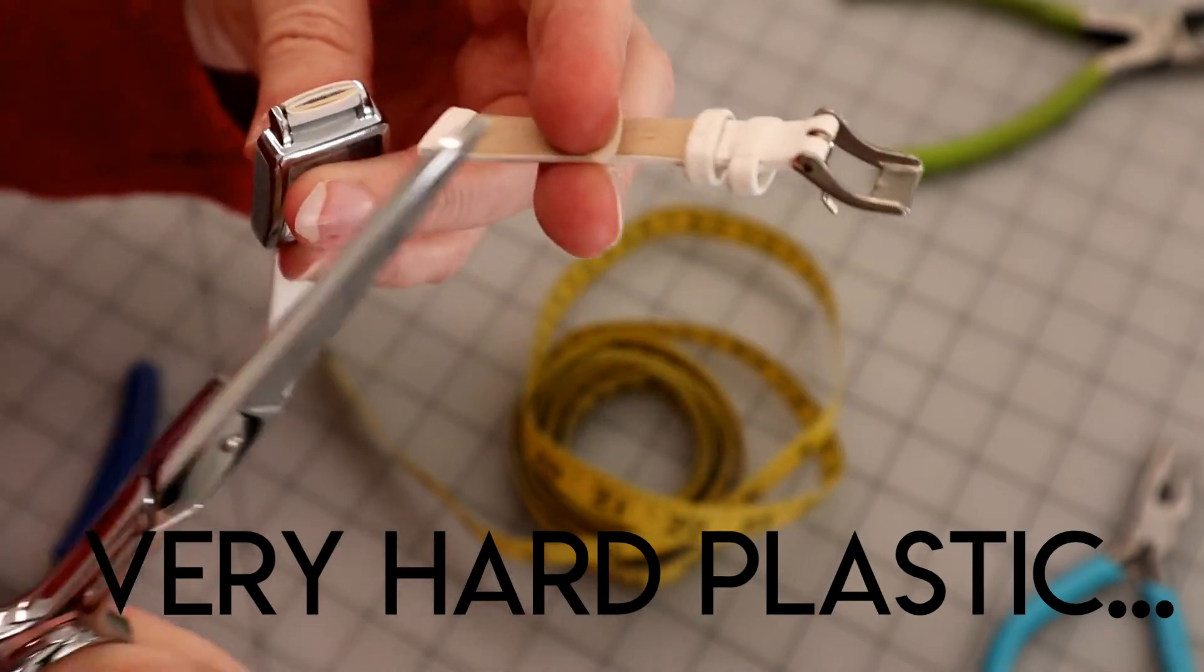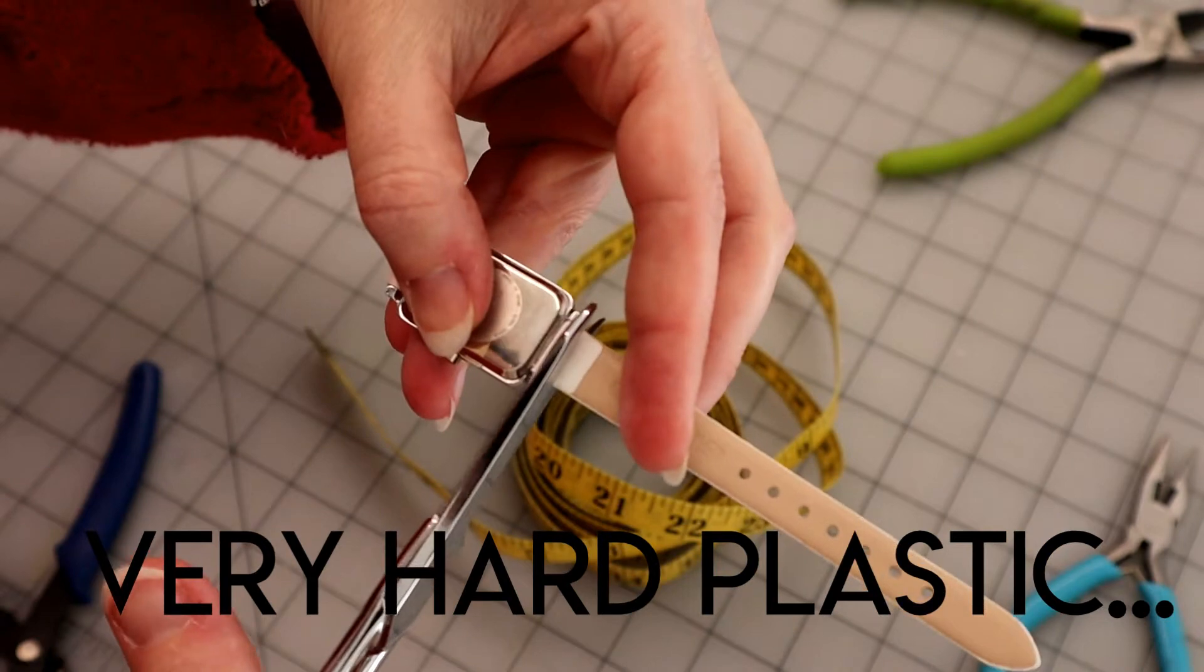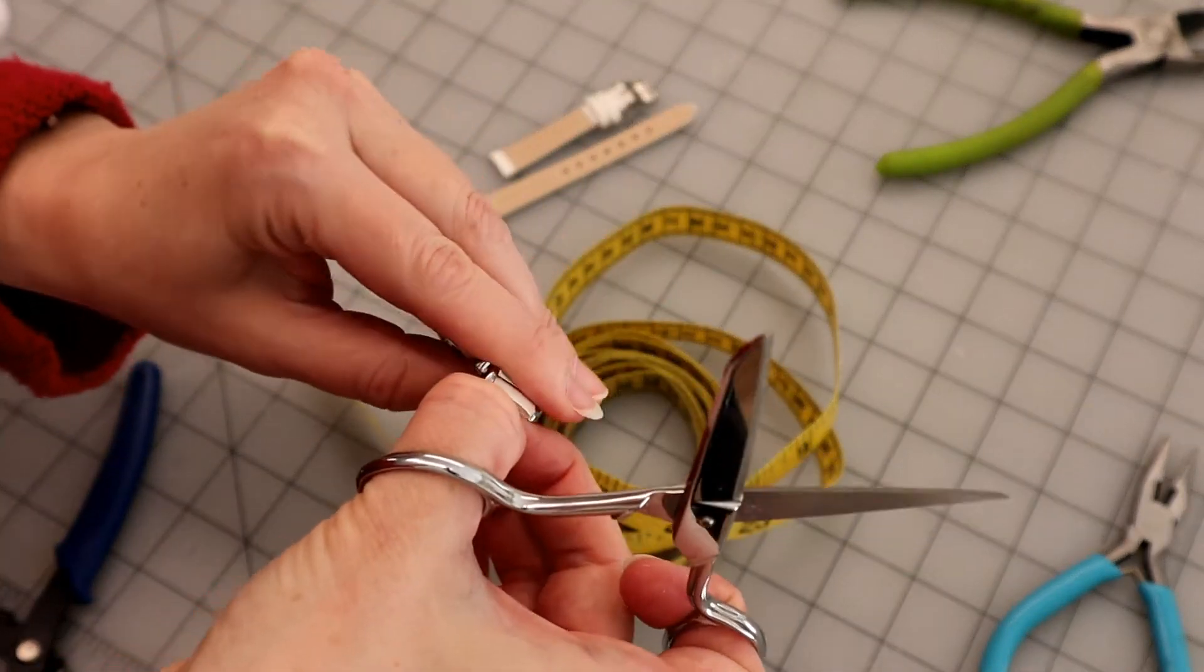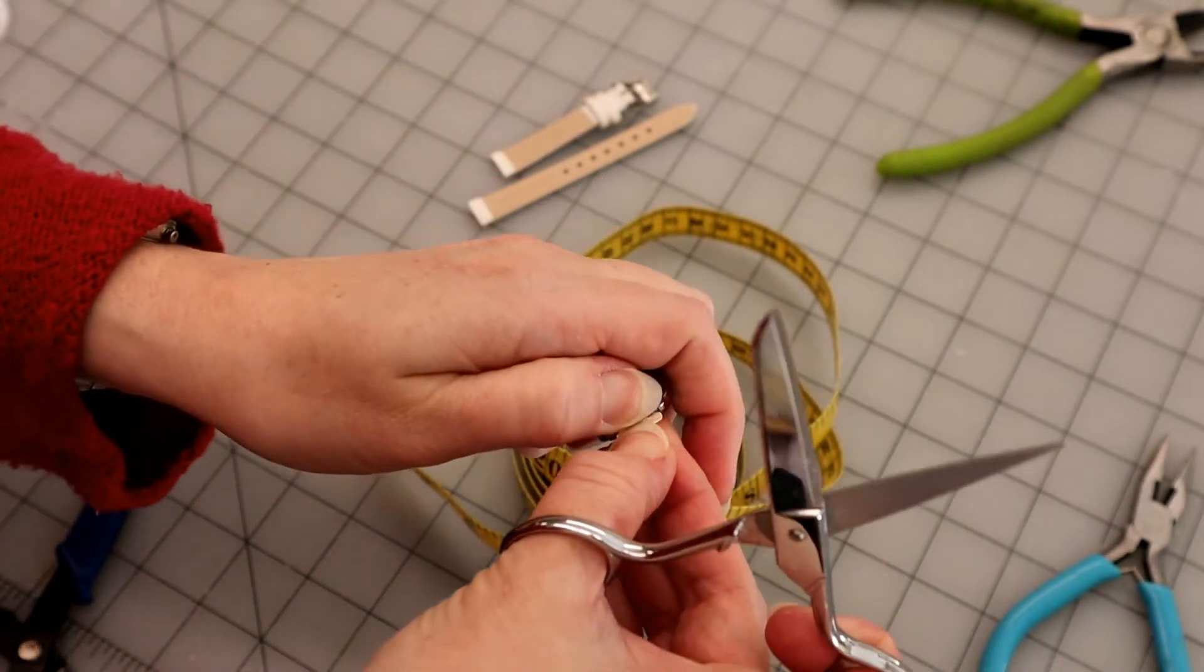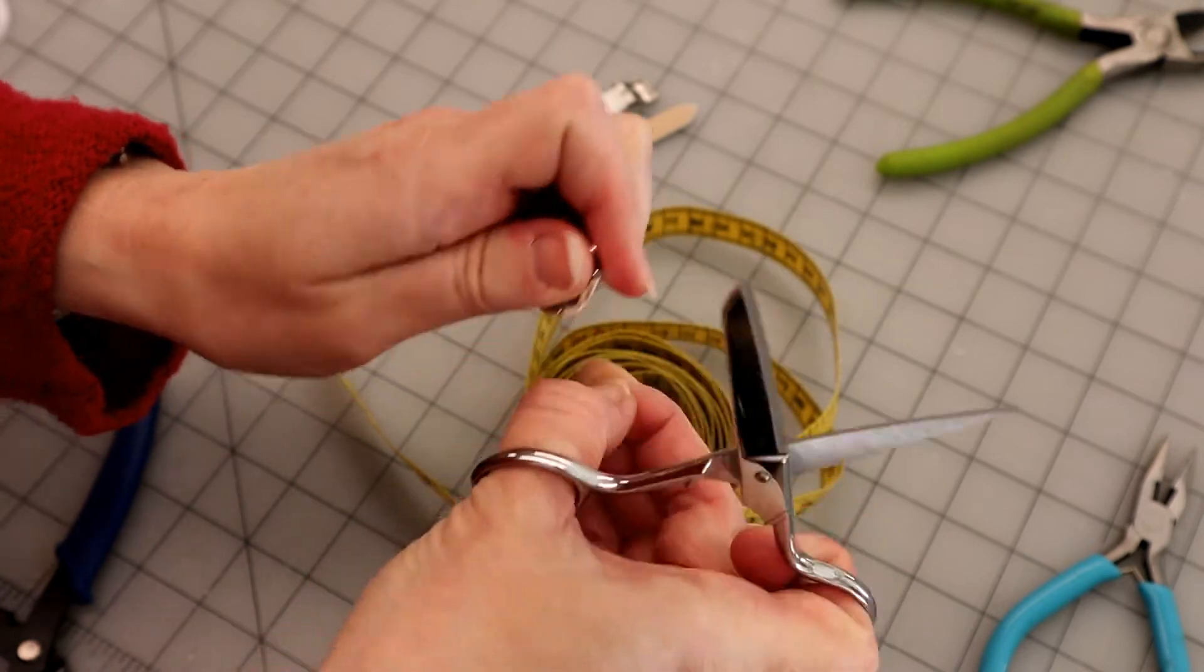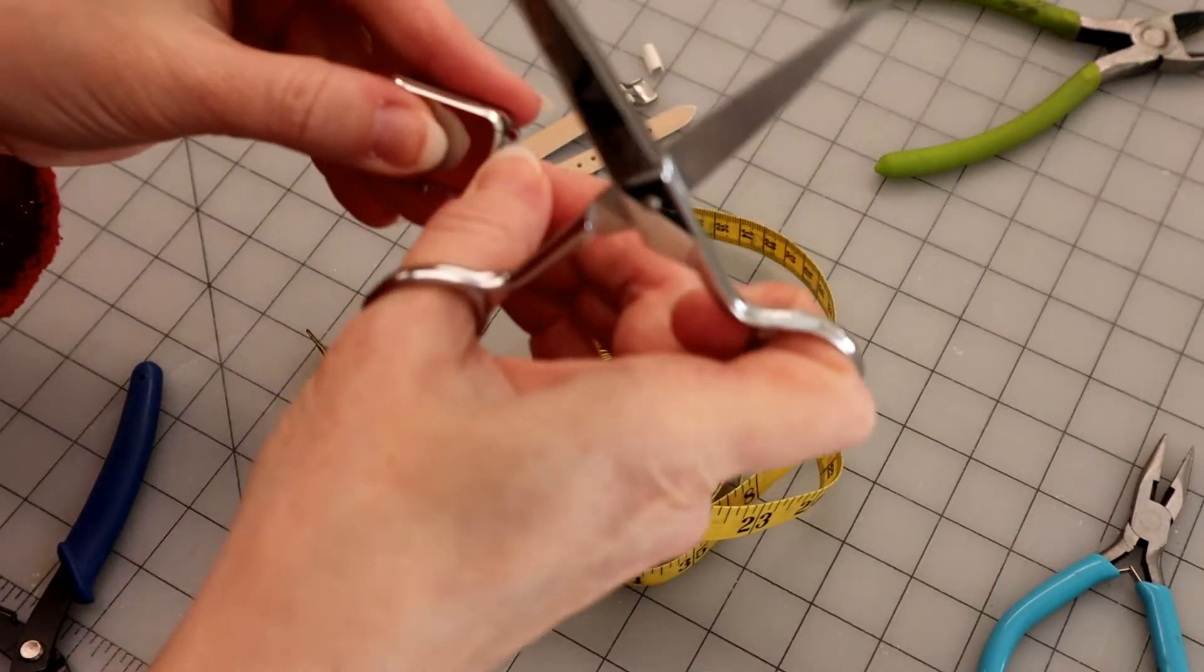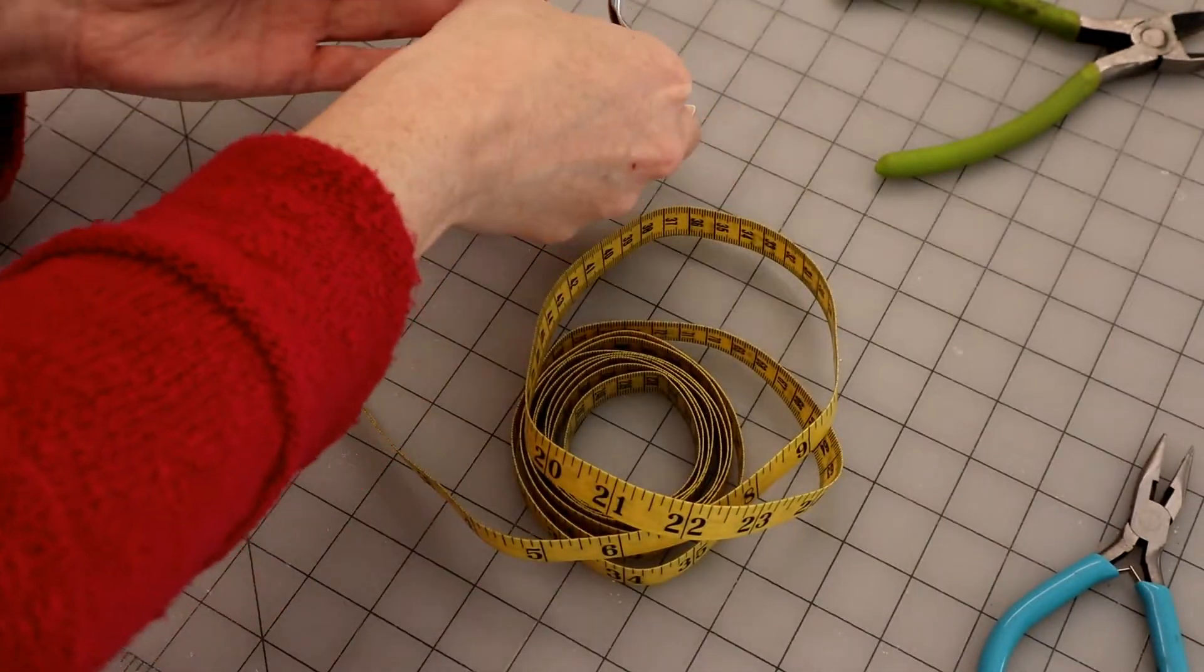So you're going to take your watch, and yeah, it looks like we're destroying it, but you're going to cut the straps off it. Keep the straps though, because we're going to need those. See how it's got this bar on each end of the case?